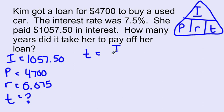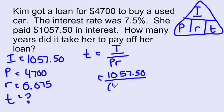So T equals I over PR. And to sub in what we know, I is 1,057.50. P is 4,700. And R is 0.075.